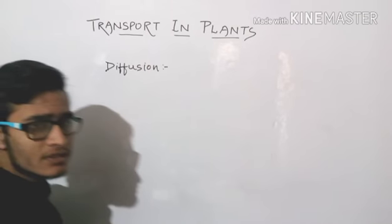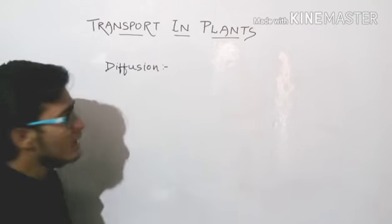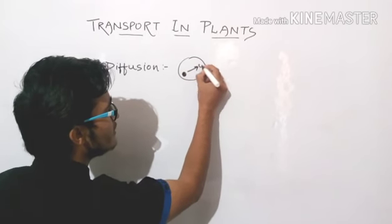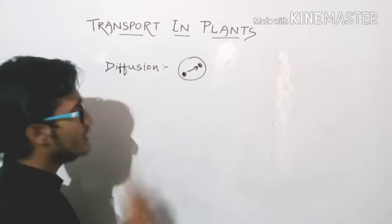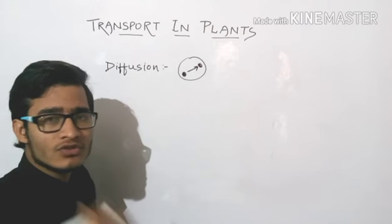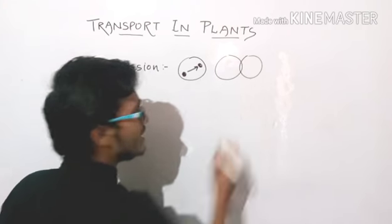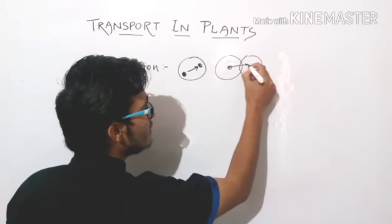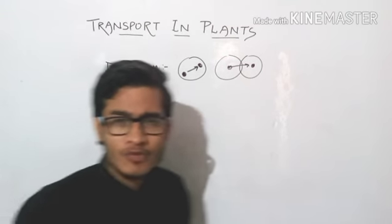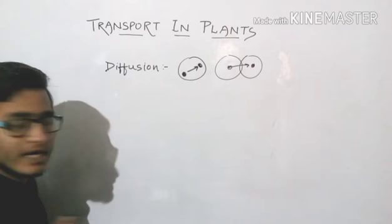Diffusion is a quite good means of transport when we talk about short-distance transport. For example, inside a particular cell, if we want to transport something from one place to another, it may take place by diffusion, because different kinds of membrane-bound organelles are present. Diffusion can also take place from one cell to another, but it is a short-distance transport which is totally dependent on a gradient.